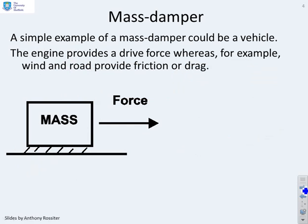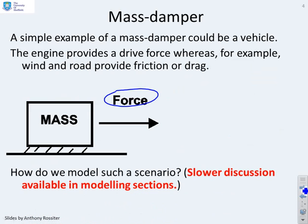Some examples then. We'll start with the mass-damper. A mass-damper could be something like a vehicle, a car. The engine provides a drive force. Here you'll see I've put a force here, which causes the vehicle to accelerate along the road. Things like wind and friction with the road provide drag. How do I model such a scenario? There is a slower discussion in the videos in the modelling sections. Here we're just going to do it very quickly.